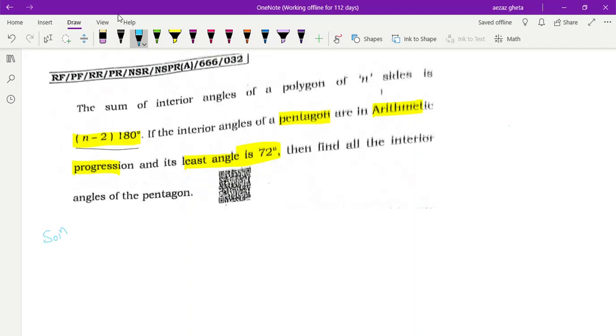Sum of interior angles of a pentagon. Pentagon means n is equal to 5. The formula is n minus 2 into 180 degrees. So 5 minus 2 into 180 degrees.